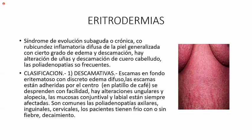La alergia primero tiene como complicación la urticaria. La complicación de la urticaria serían las eritrodermias. Si el paciente no hace tratamiento, puede llegar a tener eritrodermias. El síndrome es de evolución subaguda o crónica, con rubicundez inflamatoria difusa de la piel, generalizada en todo el cuerpo, con cierto grado de edema y descamación. Hay alteración en las uñas y descamación en el cuero cabelludo. Las poliadenopatías son frecuentes y pueden confundir con un cáncer cuando hay ganglios.